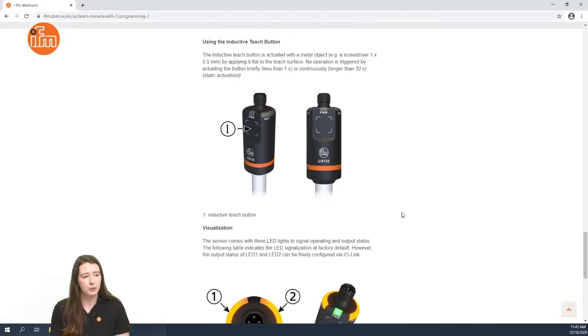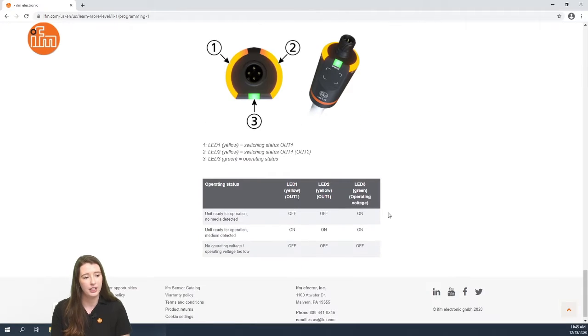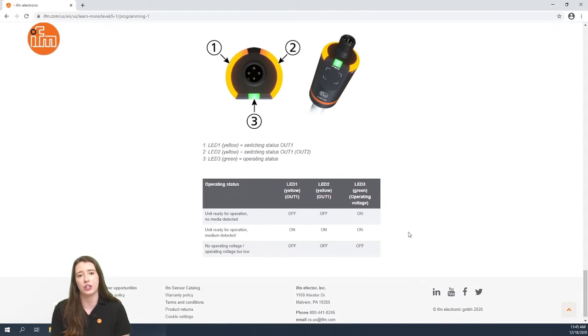At the bottom of this page we also give you examples of what the inductive teach button looks like on the housing of the sensor as well as what the LEDs look like. And finally we have a chart that describes what the different LED statuses mean. So now let me take you to the sensor itself and show you how to manually adjust it using the inductive teach button.